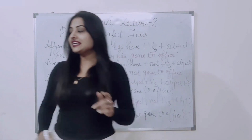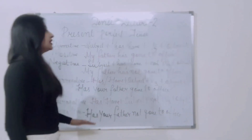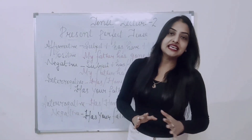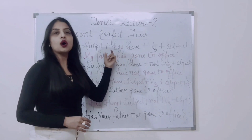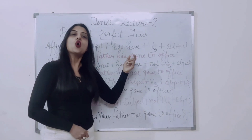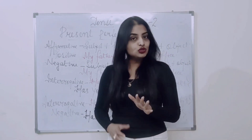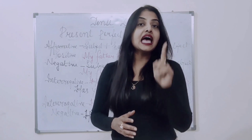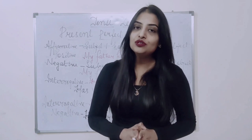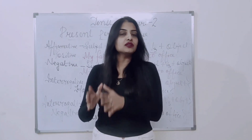So you can see how our structures work across the four cases: affirmative, negative, interrogative, and interrogative negative. We have two helping verbs — has or have. Use has with third person singular subjects, and have with plurals, I, and you — always along with the past participle form V3.